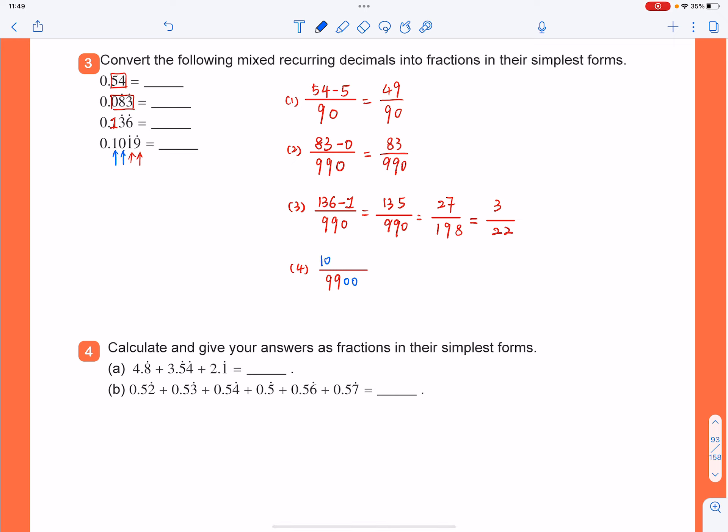And then the number in the numerator will be all the digits after the decimal point, 1, 0, 1, 9, take away the non-recurring digit, which is 1, 0. So the answer will be 1,009 over 9,900. And that's the answer to this question.